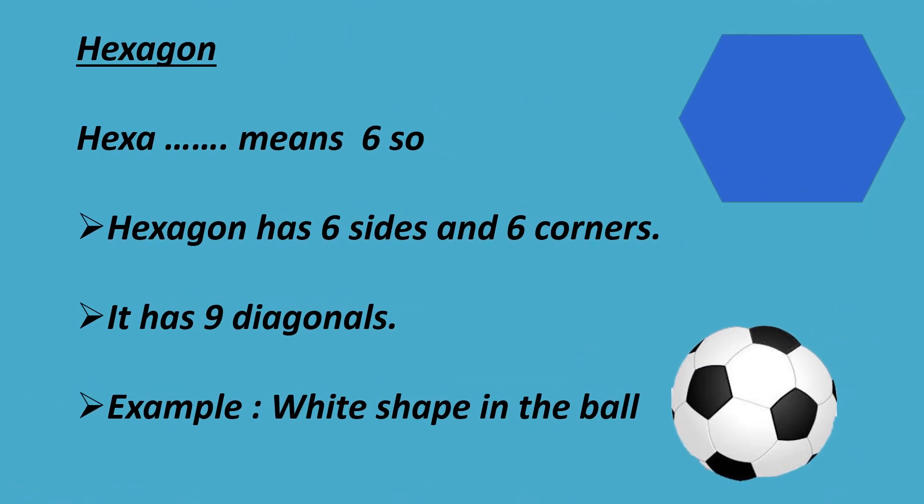Hexagon. Hexa means six. So, hexagon has six sides and six corners. It has nine diagonals. Example: white shape in the ball.